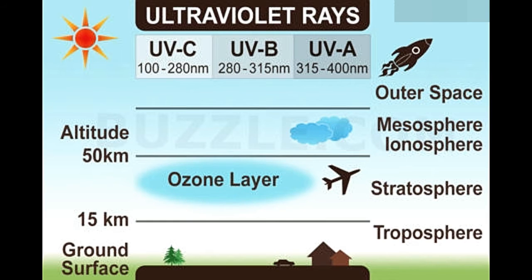Ultraviolet radiations are high-energy electromagnetic waves emitted from the sun. UV radiation includes UVA, the least dangerous form of UV radiation; UVB; and UVC, which is the most dangerous. UVC is unable to reach the Earth's surface due to stratospheric ozone's ability to absorb it. The real threat comes from UVB, which can enter the Earth's atmosphere and has adverse effects.